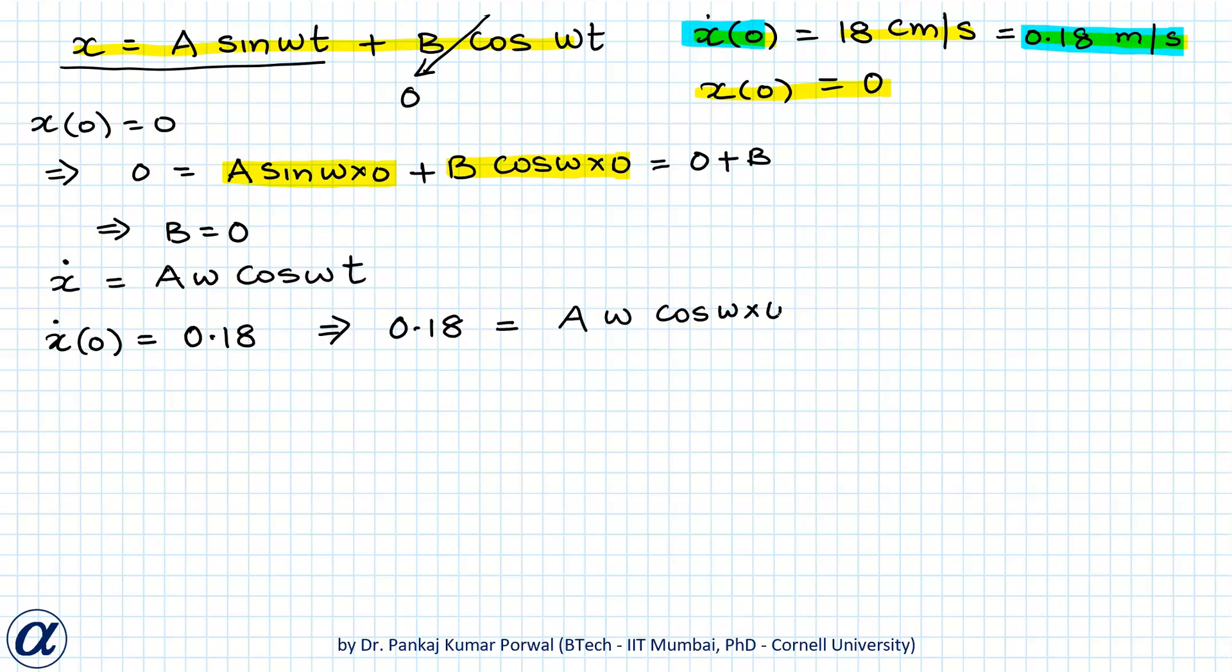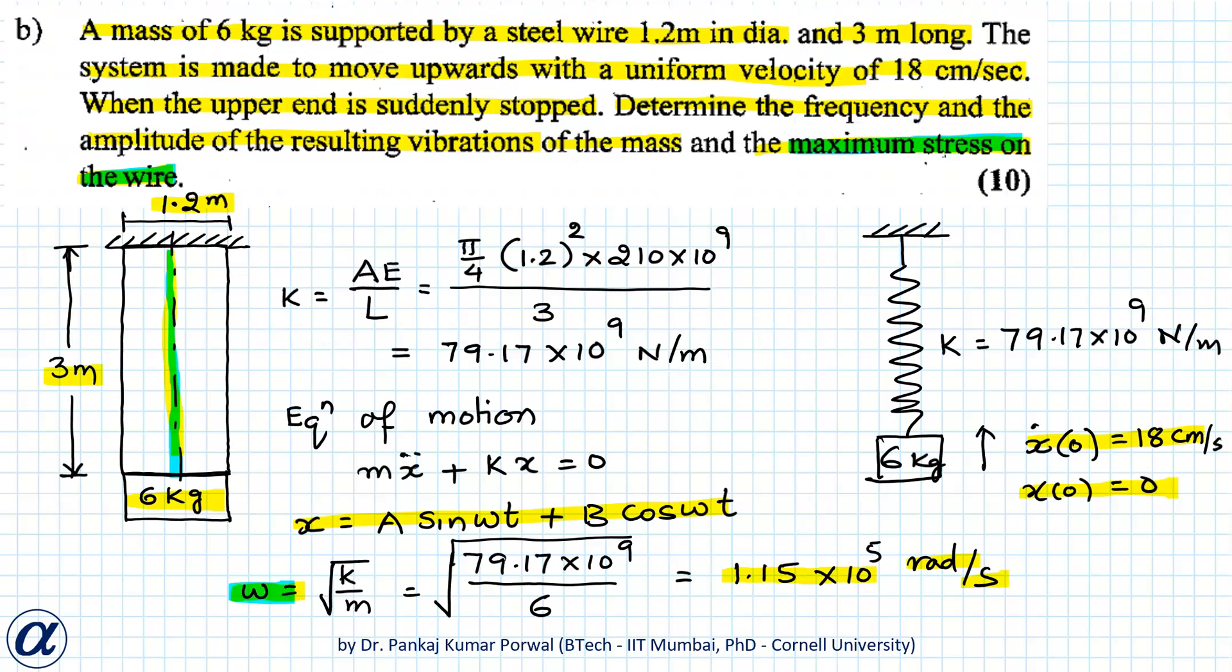So that gives me A equals 0.18 upon ω. That is 0.18 upon ω equals to 1.15 into 10 to the power 5 radian per second. So this gives me 1.57 into 10 to the power minus 6 meters.